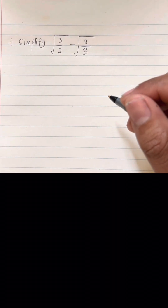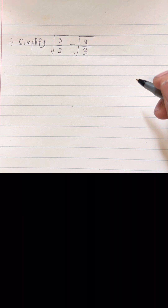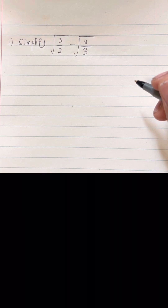Here is our problem number one, one of the questions in MTAP. Simplify the square root of 3 halves minus the square root of 2 thirds.